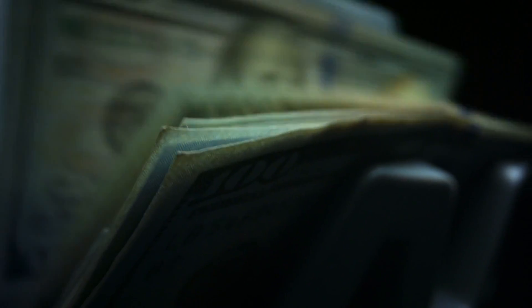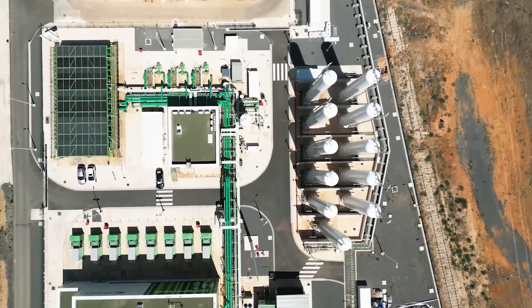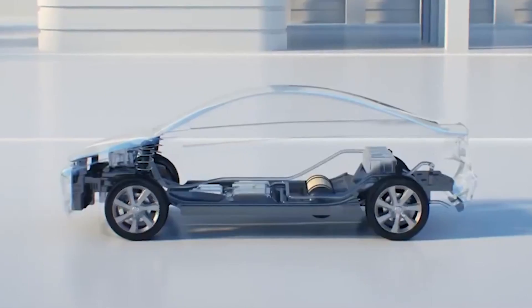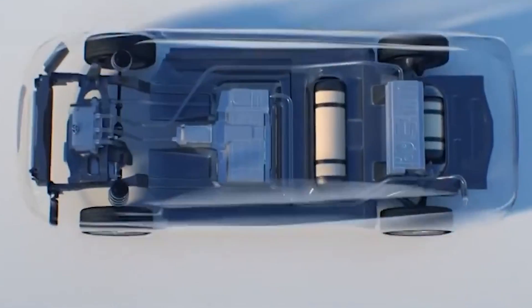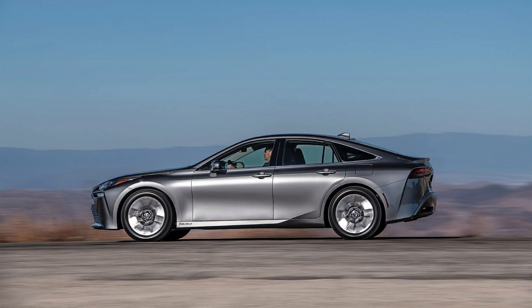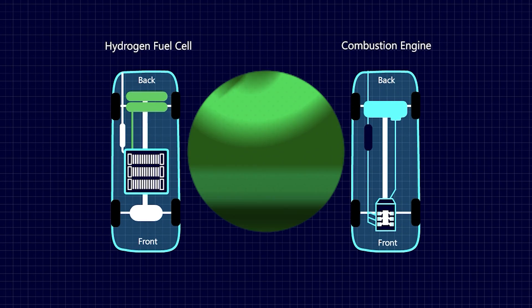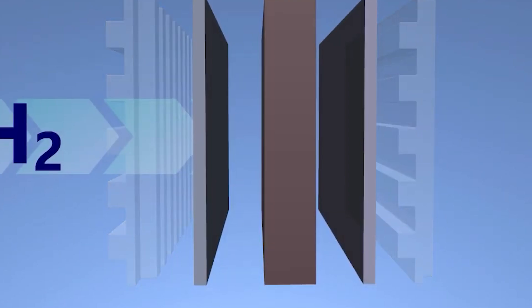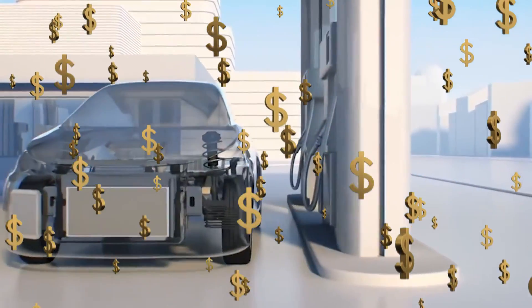Another hurdle is the cost of fuel cell technology. Hydrogen FCVs tend to be more expensive to produce than electric vehicles due to the complexity of fuel cell systems and the cost of platinum catalysts. As a result, hydrogen vehicles often carry a higher price tag, which could deter price-sensitive customers. However, with technological advancements and economies of scale, it is possible for costs to decrease over time, making FCVs more affordable and accessible.